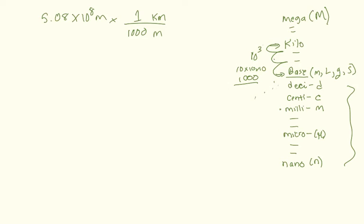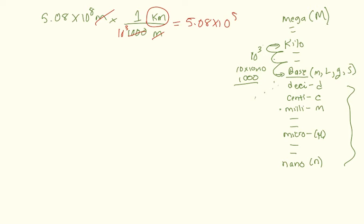My meters cancel and I'm left with my desired unit of kilometers. This can also be written as 10 to the third. I can do this in my head: 10 to the eighth divided by 10 to the third gives 5.08 times 10 to the fifth. When you divide, you subtract exponents — eight minus three equals five. You can always use a calculator, but that's why we use the metric system: all units are related by powers of ten.